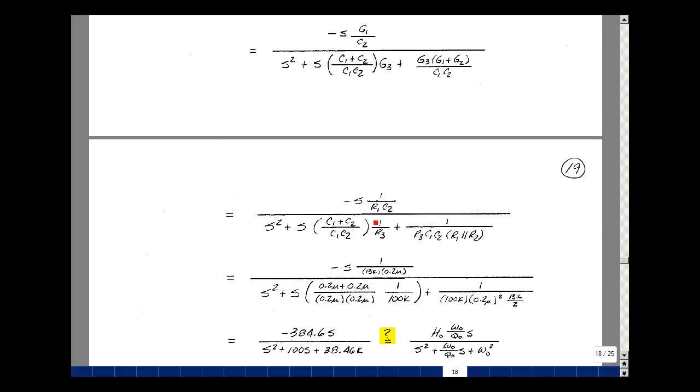Next, let's replace G1 by 1 over R1, G3 by 1 over R3, likewise 1 over R3 here. And this term, G1 plus G2, is the parallel combination of R1 and R2. So I could write that as 1 over R1 in parallel with R2.